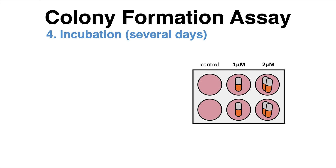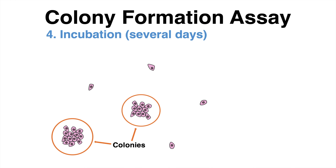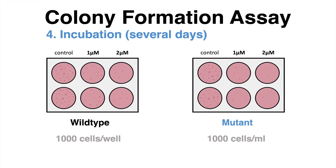Zooming into a plate, one can observe that some single cells that were seeded before proliferate. Those small aggregates will later be classified as colonies. After approximately 10 days of incubation, the plates can be observed. Small dots can already be seen on the plate, but it is hard counting them like this.